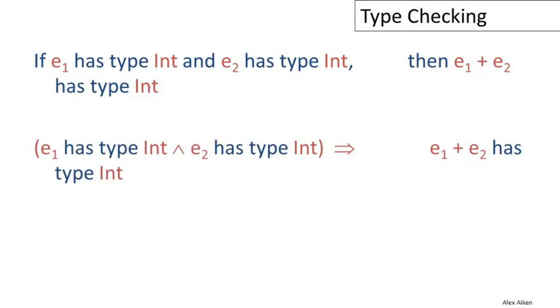We can take the definitions from the previous slide and gradually reduce this to a mathematical statement. We can replace the if-then with an implication and replace the word 'and' with a conjunction.